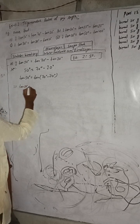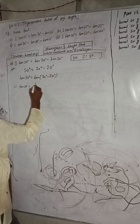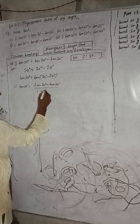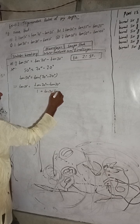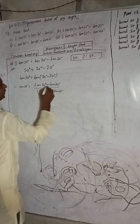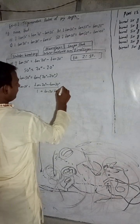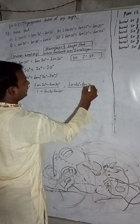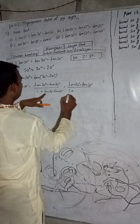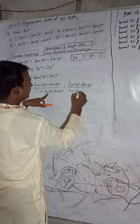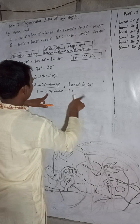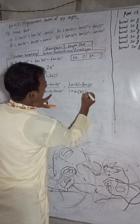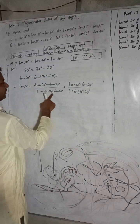Applying the tan(A − B) formula: tan50° = (tan70° − tan20°) / (1 + tan70°·tan20°). Now tan70° can be written as tan(90° − 20°), and since 90° − 20° is in the first quadrant, all ratios are positive. So tan(90° − 20°) = cot20°.